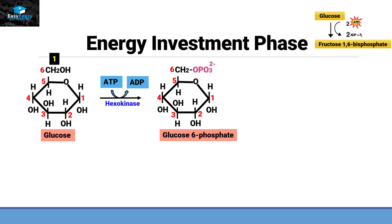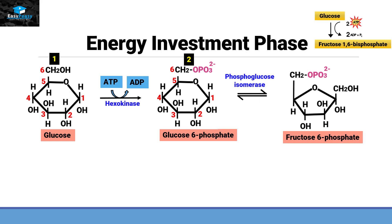Step 2: glucose 6-phosphate, with the help of phosphoglucose isomerase, rearranges its molecule and converts into fructose 6-phosphate. This is again a 6-carbon compound — carbon atoms 1 through 6 are all present — only the arrangement of bonds is different in this molecule.